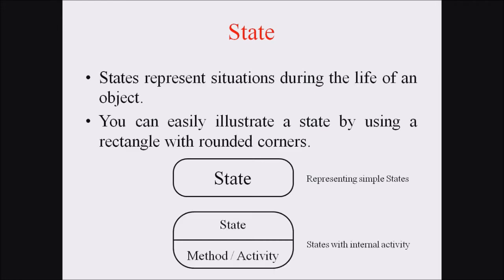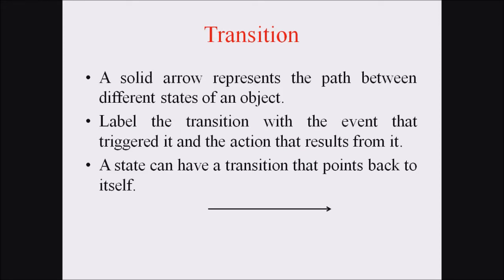The second type of representation is a state with an internal activity. The rectangle has two compartments — the topmost compartment represents the state name, and the bottom compartment represents the method or activity associated with that particular state. The next notation is the transition notation.